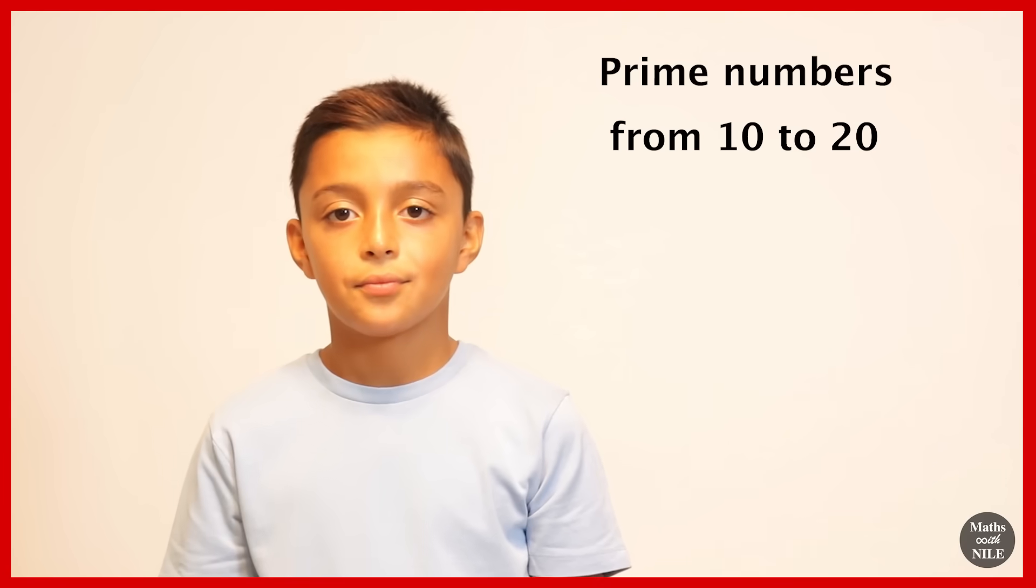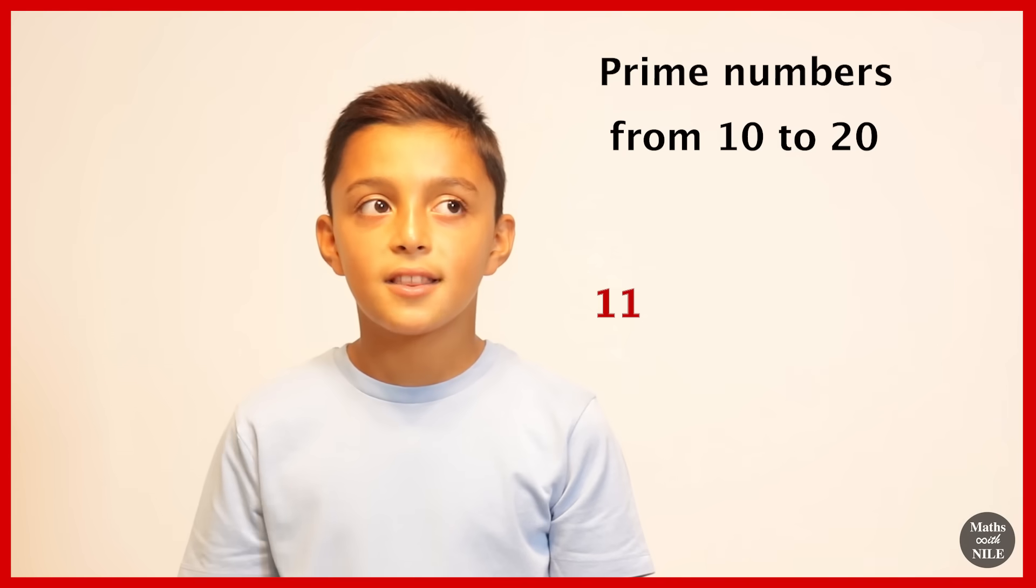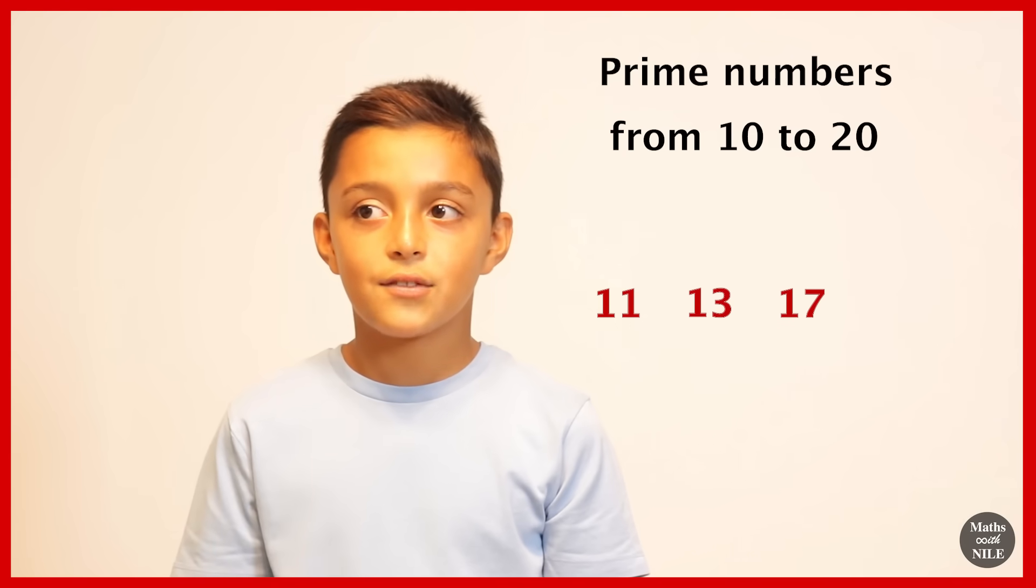Okay guys, let's go. Prime numbers between ten and twenty in ascending order. Eleven, thirteen, seventeen and nineteen. Brilliant.